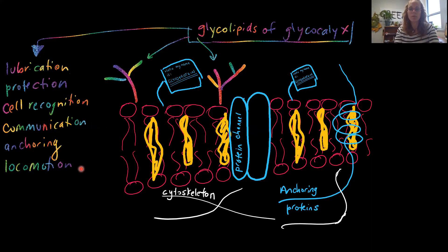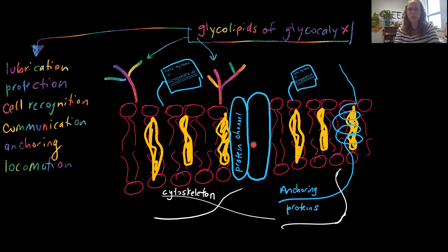Takeaway: our cell membrane is composed of lipids, carbohydrates, and proteins. Lipids form the basic structure of the phospholipid bilayer. Phospholipids are important in the semi-permeable nature of the membrane, and cholesterol is our stabilizer. Proteins have roles in making channels, in anchoring, and in self-recognition and immune response via glycoproteins. Glycolipids — carbohydrates and lipids — form our glycocalyx, which has a whole list of functions. And that's it for now.